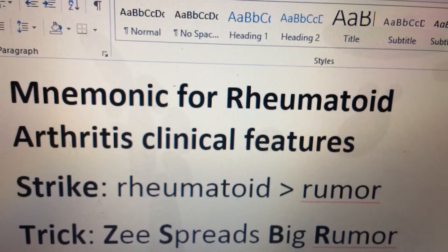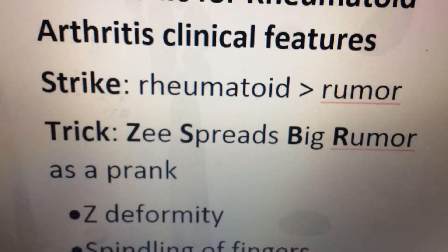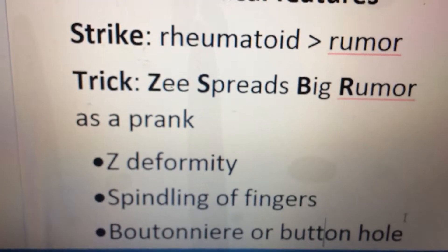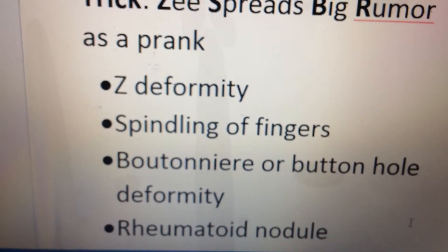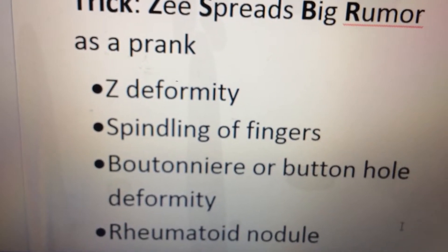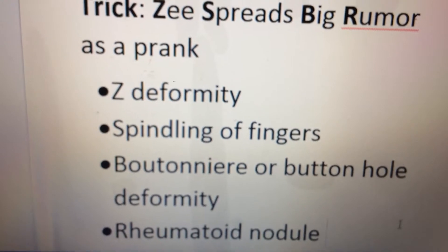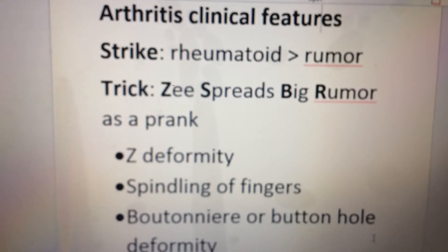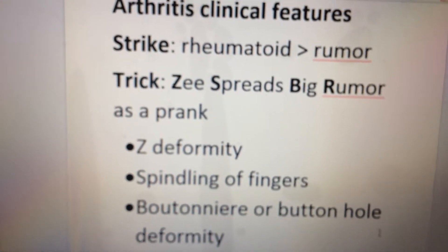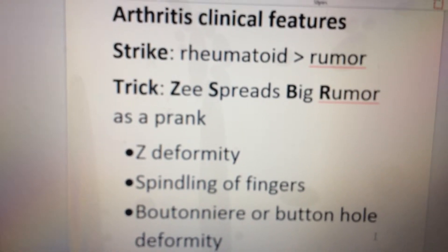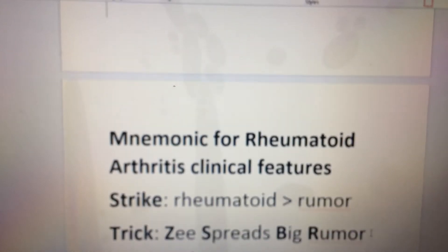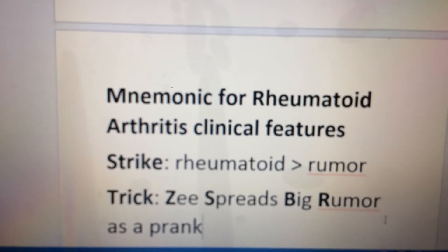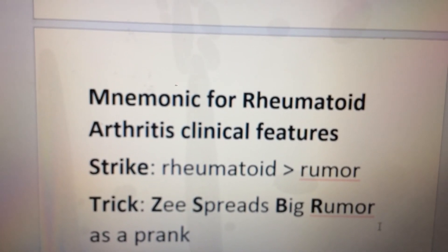'Z spreads big rumour as a prank.' The meanings are: Z deformity, spindling of fingers, buttonhole deformity, and rheumatoid nodule. This is the complete mnemonic for the clinical features of rheumatoid arthritis — Z spreads big rumour as a prank. Thank you.